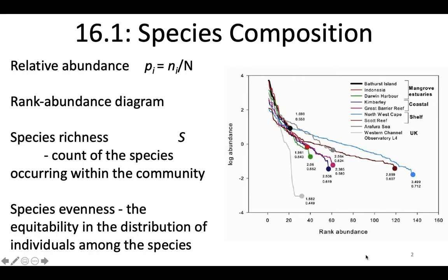I'm not going to ask you to calculate any of these on the next exam, but I will expect you to be able to interpret any values that you are given on the exam. One of the most basic parameters measured in communities is relative abundance, which is an integral component of many calculations for measuring species diversity — it's just for an individual species, how many are there out of the total number. Rank abundance diagrams are often used to look at species composition as well.